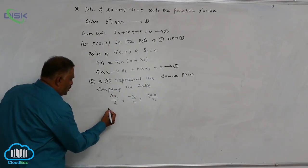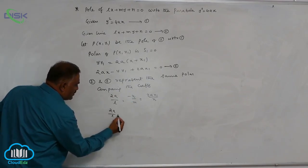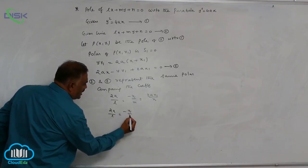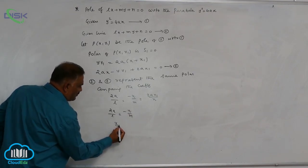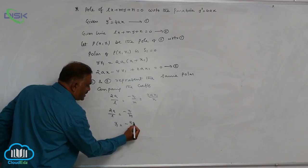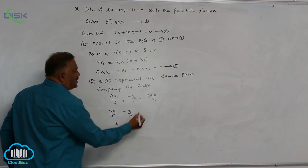Take first two: 2A by L is equal to minus y1 by M implies y1 is equal to minus 2AM by L.